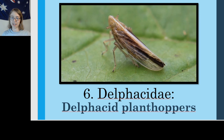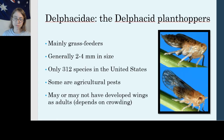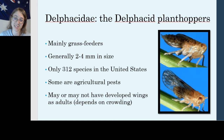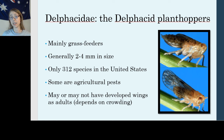And finally, Delphacidae — another fairly uncommon family, but I have found them before so there's a chance you could too. These are the Delphacid plant hoppers. Delphacids are mainly grass feeders and really small — generally only 2 to 4 millimeters in size. We have 312 species in the U.S., and despite that, a few have managed to become agricultural pests. They are a major pest of sugarcane, which is a type of grass and where most of our sugar comes from in the U.S.